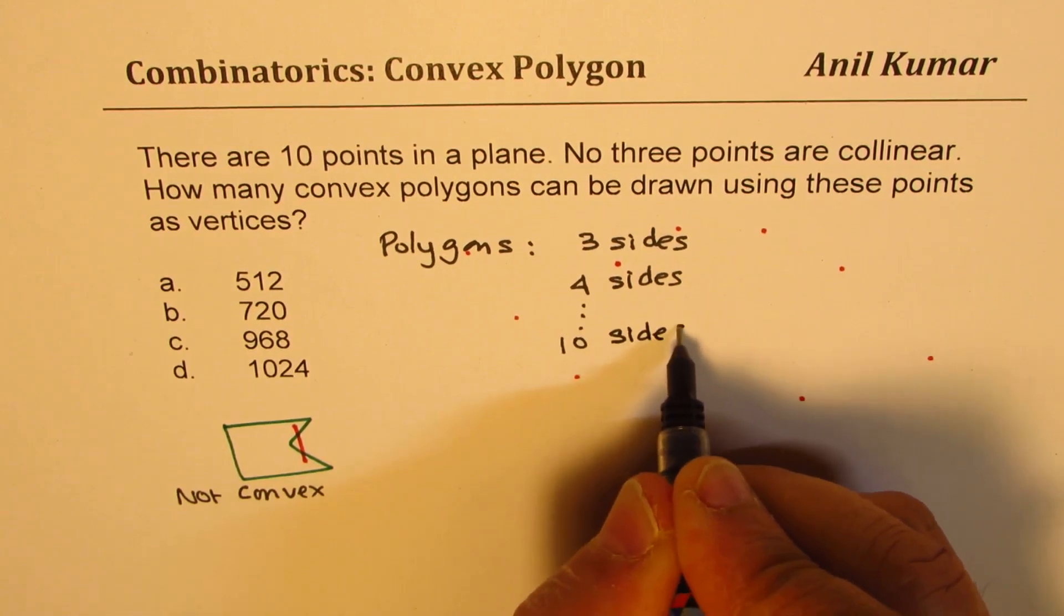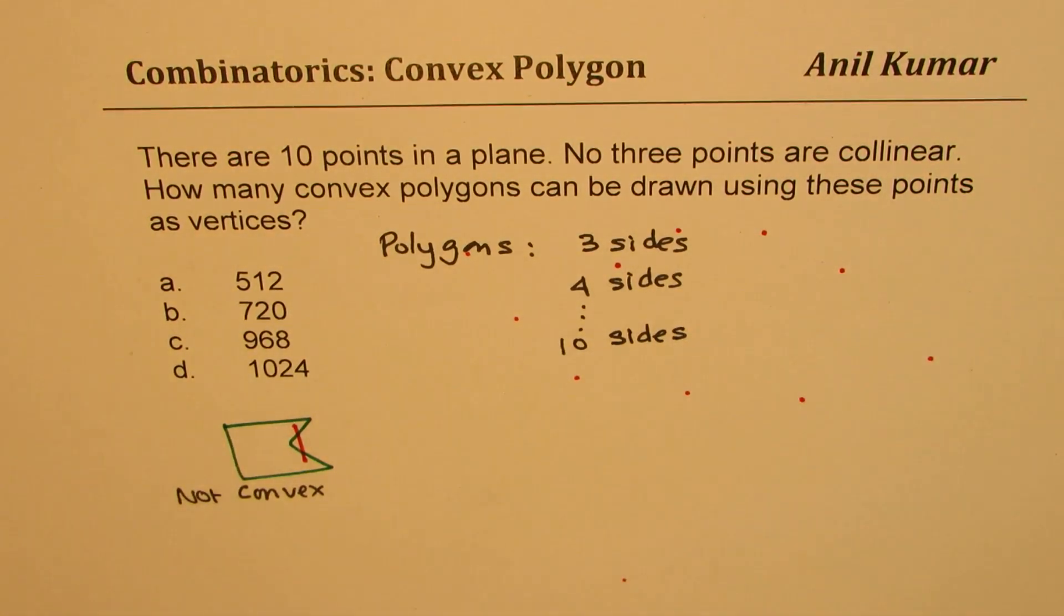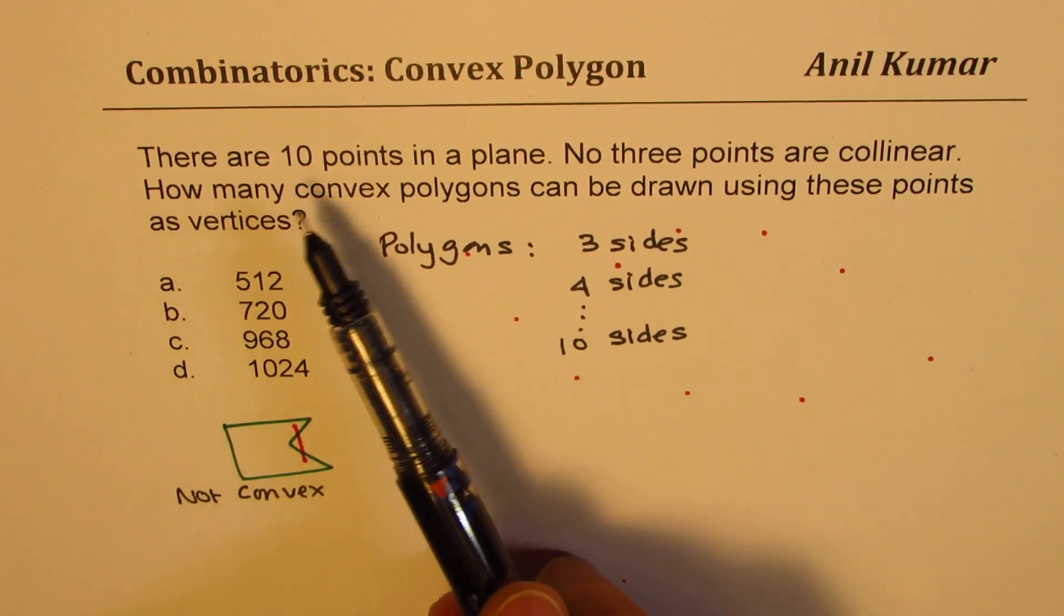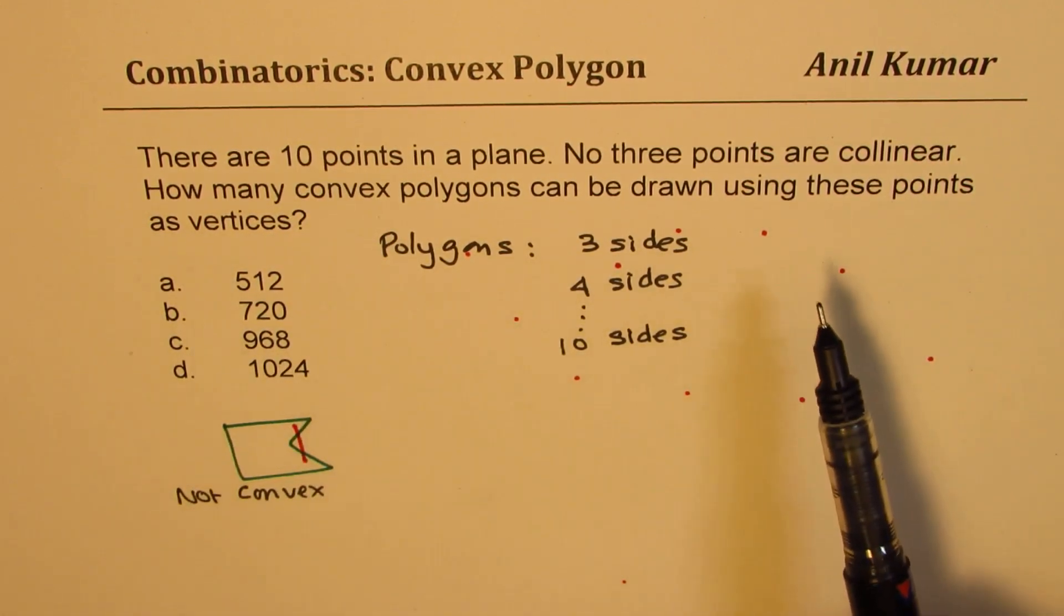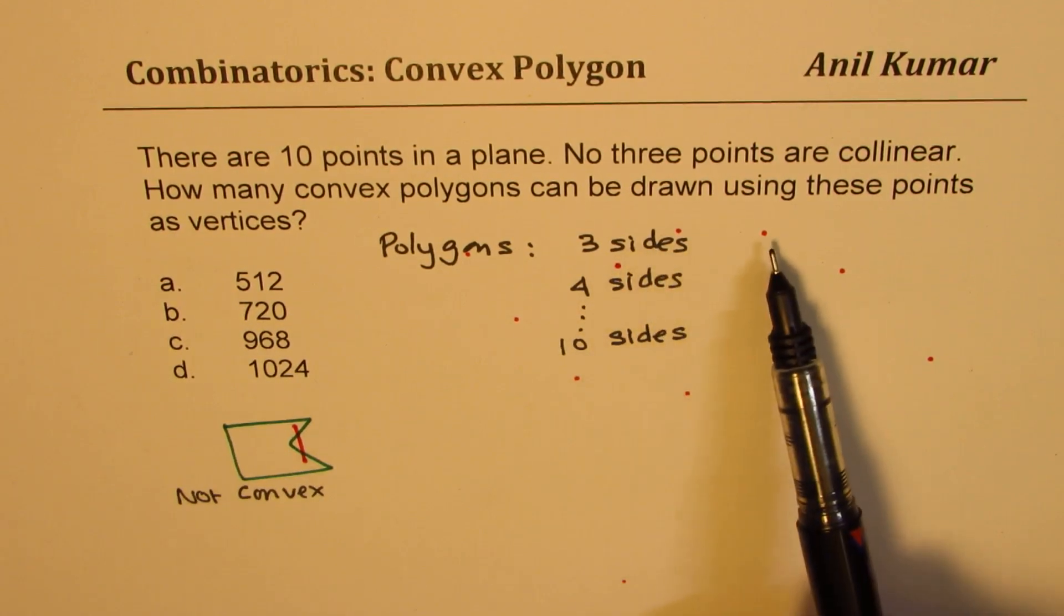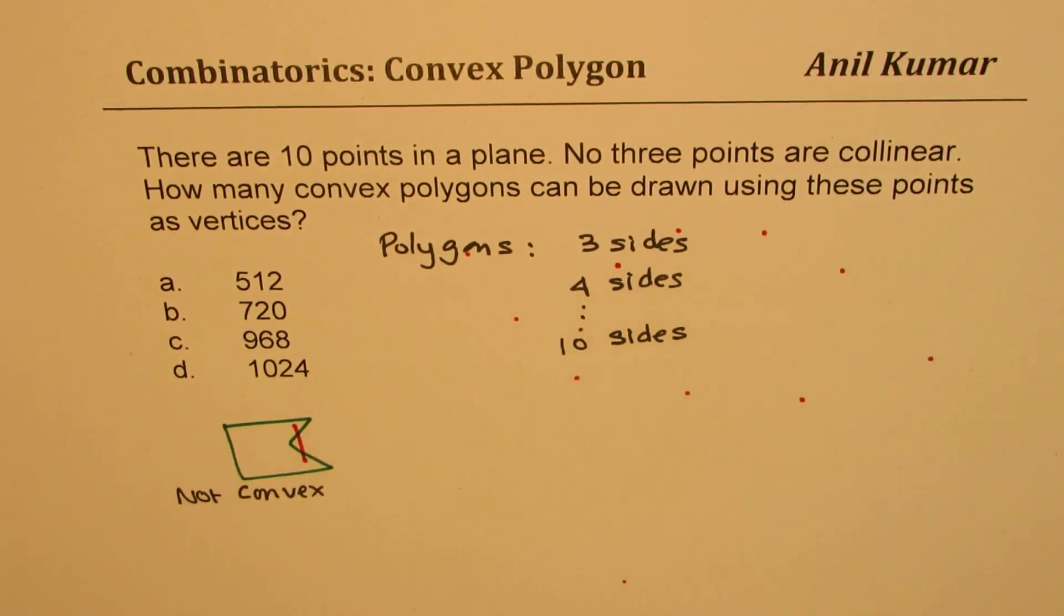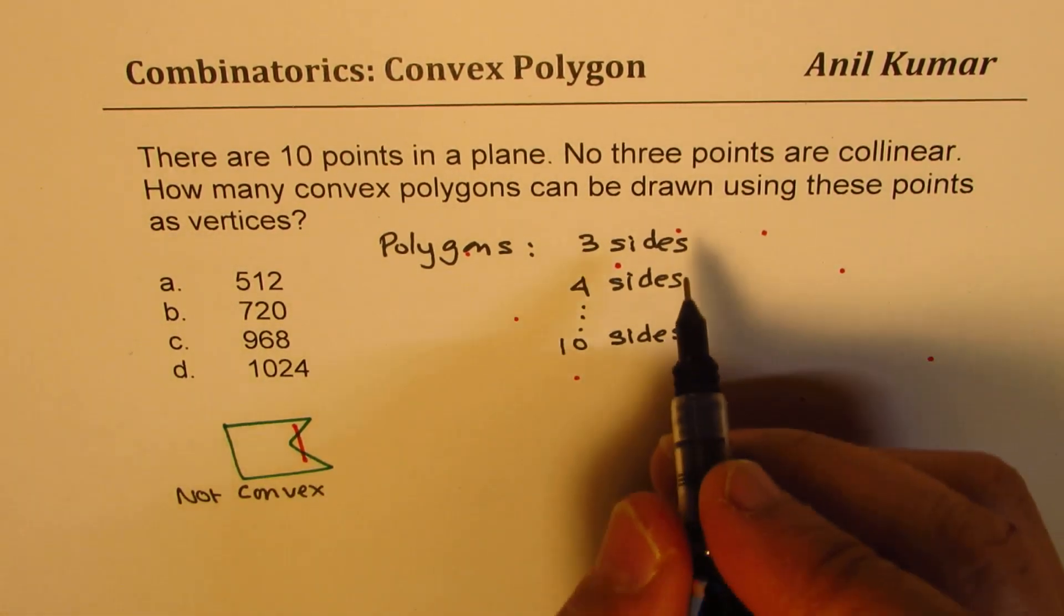It doesn't make sense to you, correct? So that gives you an idea. So you have 10 points and with these 10 points, you may make a polygon using three sides, right? So how many with three sides? That is what you could do.